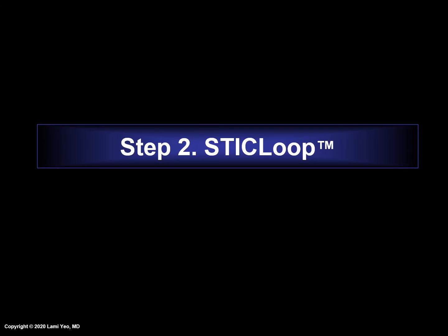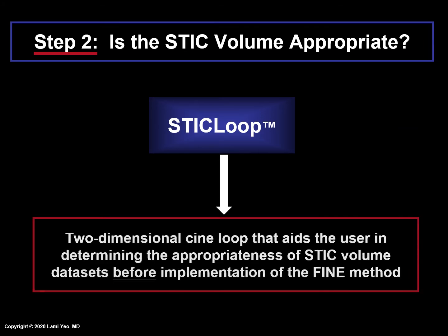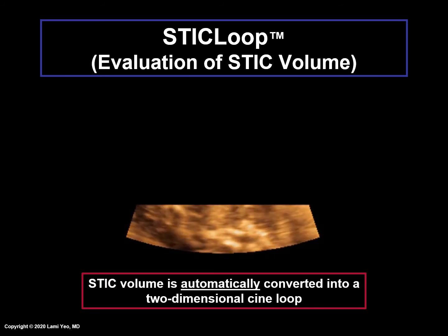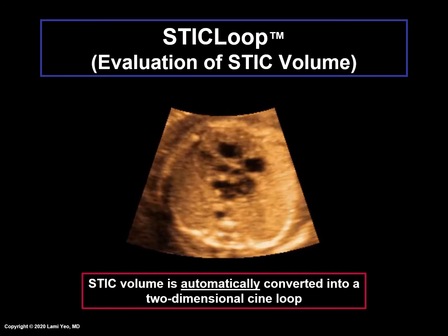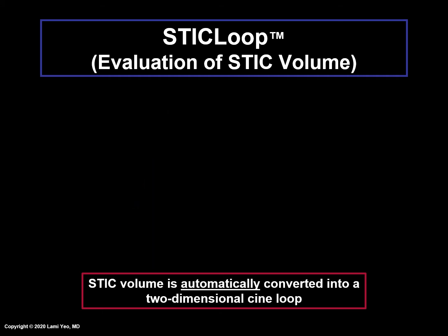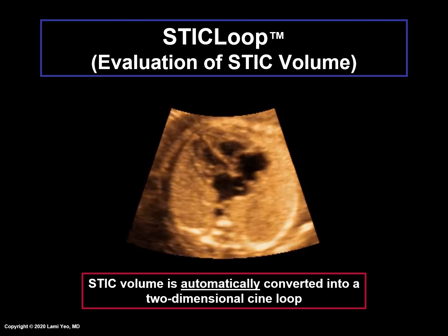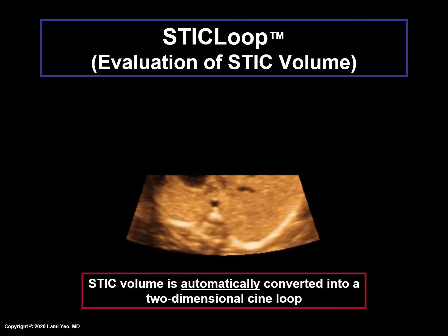The second step is STIC loop. This is a two-dimensional CINELoop that aids the user in determining the appropriateness of STIC volume data sets before implementation of the FINE method. Once a STIC volume has been acquired, the system automatically converts the volume into a two-dimensional CINELoop that scrolls in a continuous fashion. This is why it is called STIC loop.